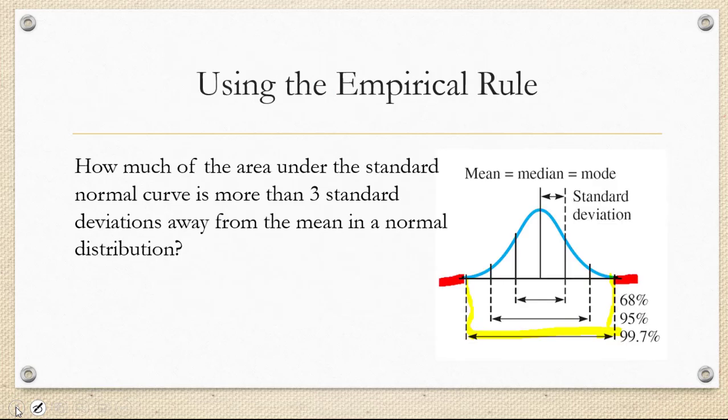Now we could have changed the question that we asked earlier to refer to area instead of percentage. So how much of the area under the standard normal curve is more than 3 standard deviations away from the mean in a normal distribution? Before, we were dealing with percent.